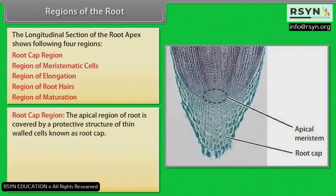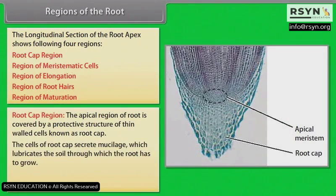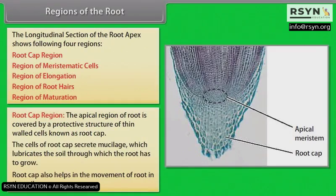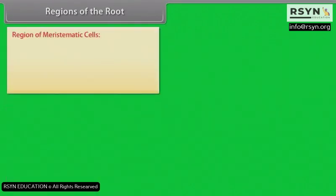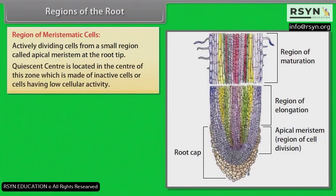Root cap region: The apical region of root is covered by a protective structure of thin-walled cells known as root cap. The cells of root cap secrete mucilage, which lubricates the soil through which the root has to grow. Root cap also helps in the movement of root in the soil. Region of meristematic cells: Actively dividing cells form a small region called apical meristem at the root tip. Quiescent center is located in the center of this zone, which is made of inactive cells or cells having low cellular activity.